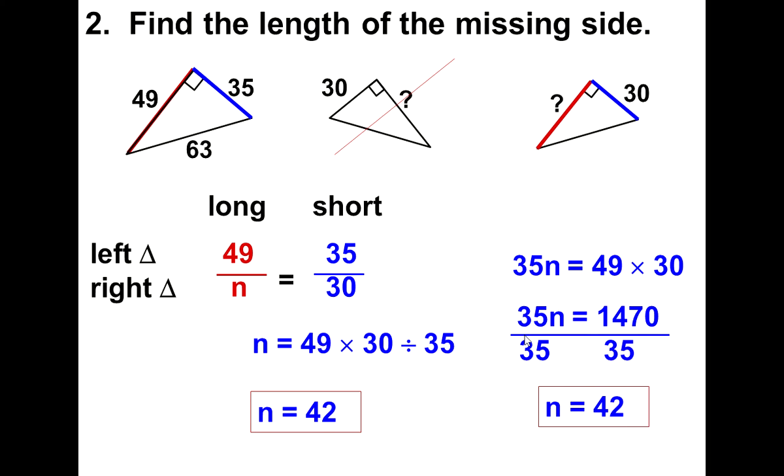You get n is 42. And again, you're doing the same operations, 49 times 30 and dividing by 35.